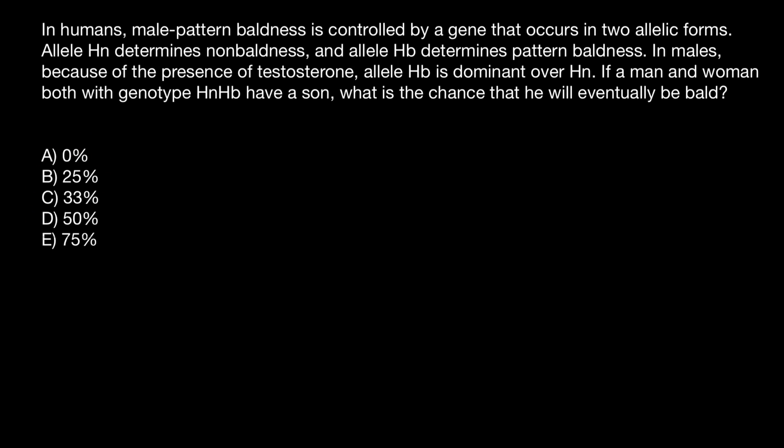You have to choose one of these answers. We can solve this problem if we build a simple Punnett square. The male genotype would be here, and his genotype is HN-HB.